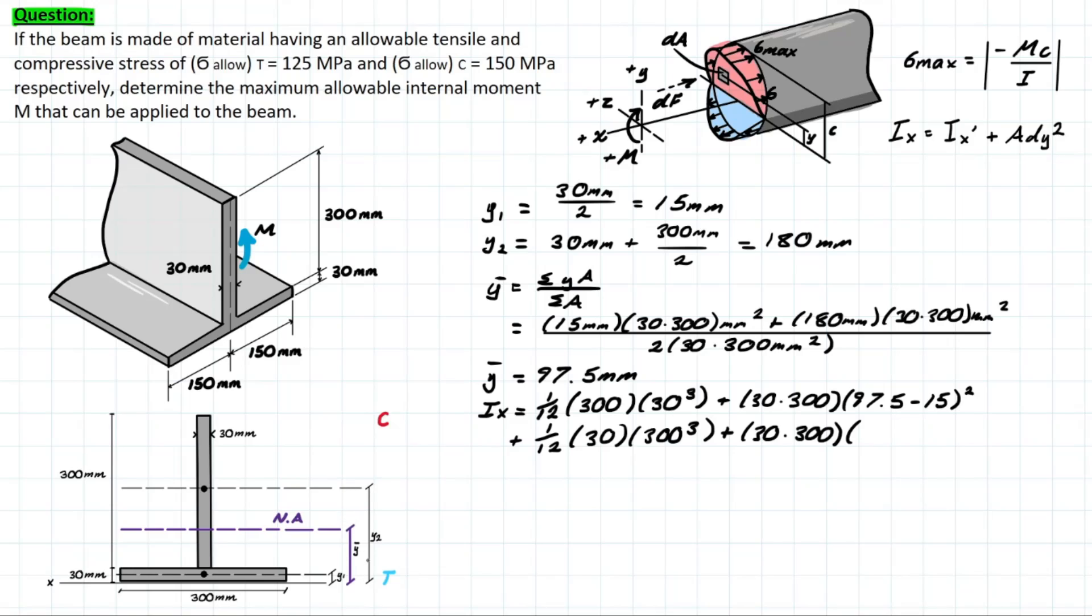And now we have the distance between the neutral axis and y2. So we have to take y2 subtracting y-bar, which means we're going to have 180, which is what we solved for previously, and subtracting 97.5. Squaring that, we equal this moment of inertia value to 190.7 times 10 to the 6 mm to the 4th.